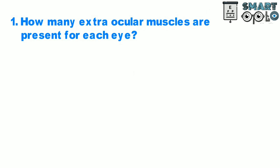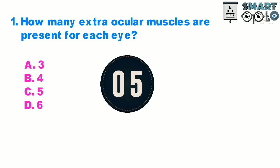Question 1. How many extraocular muscles are present for each eye? A. 3, B. 4, C. 5, D. 6.